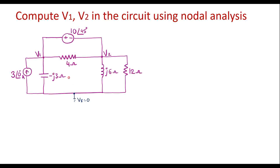As we know in node analysis, node voltages are the variables we are supposed to calculate. Let current through this branch be I1, current through this branch be I2, current through this branch be I3, and current through this branch be I4.